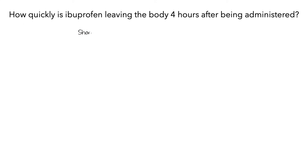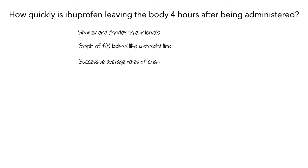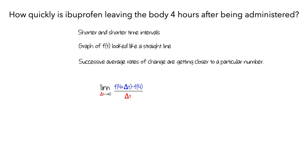To summarize what we have observed: as we look at shorter and shorter time intervals, the graph of f of t looks more and more like a straight line — it is getting closer to having a constant rate of change. As this happens, the successive average rates of change are getting closer to a particular number. In more formal notation, we write f(4 + Δt) − f(4) all divided by Δt to show the average rates of change. We write delta t goes to 0 to represent the decreasing length of the time intervals, and we write the limit to indicate the number that these are all getting closer to. It's important to remember that the average rate of change requires that there be a change in time, so the limit isn't itself an average rate of change — it's a number that the average rates of change are approaching. From our work, we saw that these average rates of change were getting closer to roughly –34.813 mg per hour.